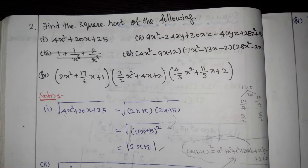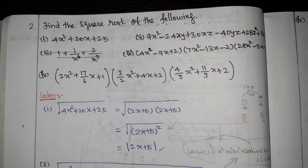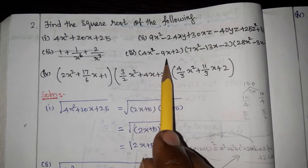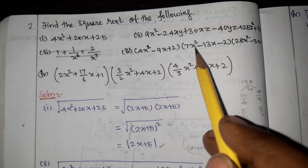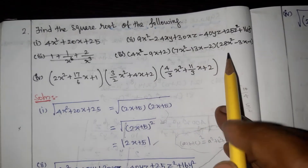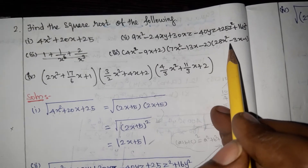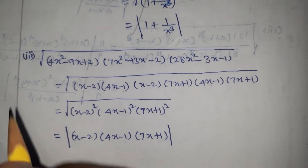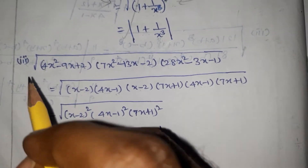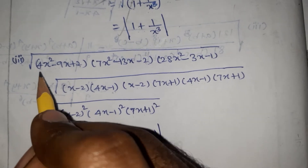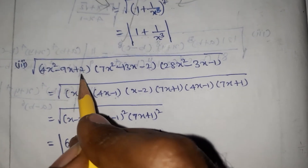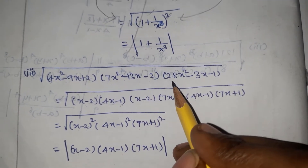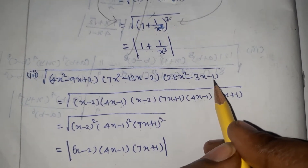Exercise 3.7, question number 2, third sub-question: find the square root of the following expression — 4x squared minus 9x plus 2, into 7x squared minus 13x minus 2, into 28x squared minus 3x minus 1.